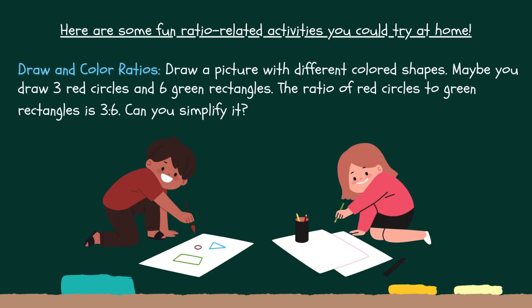Draw and color ratios. Draw a picture with different colored shapes. Maybe you draw three red circles and six green rectangles. The ratio of red circles to green rectangles is 3:6. Can you simplify it?